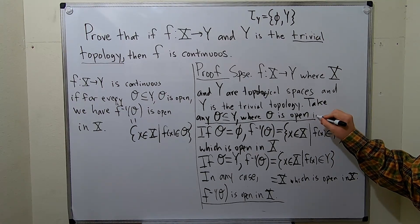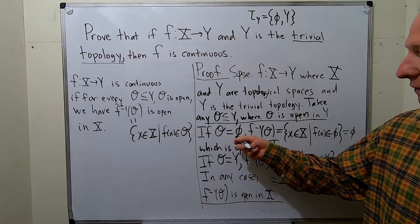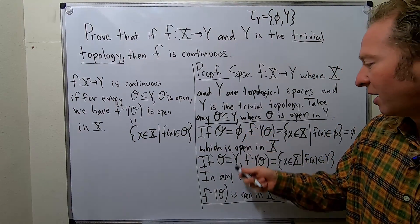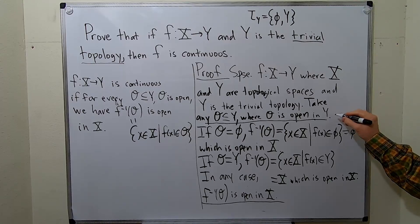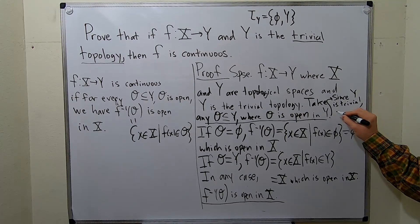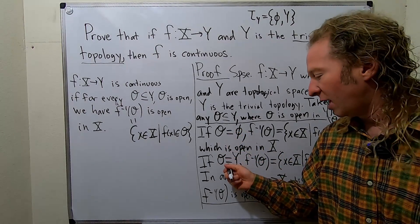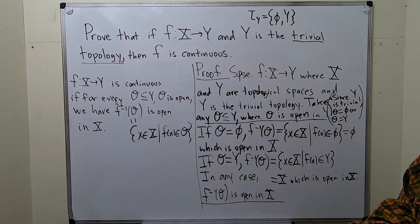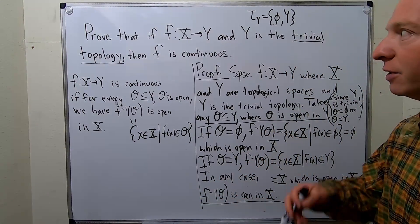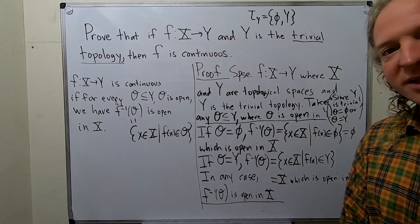For clarity, you could note that O is open in Y, and before handling the cases, emphasize that because it's the trivial topology — which is the key — you only have two cases: O equals the empty set or O equals Y. That's it. I hope this video has been helpful to someone out there working on topology. This is considered a really easy proof, but if you're learning topology it's good to go through all of the details. Until next time, take care.